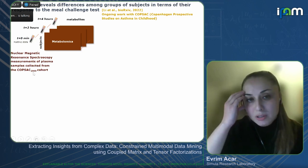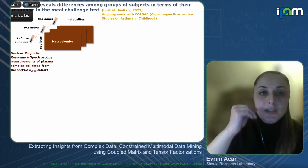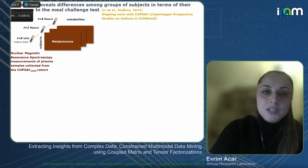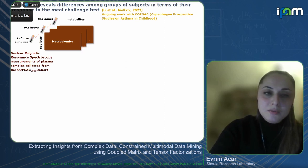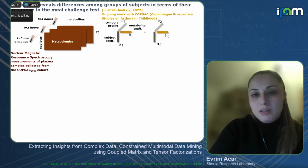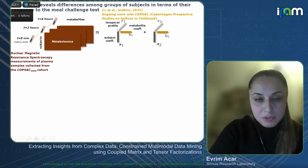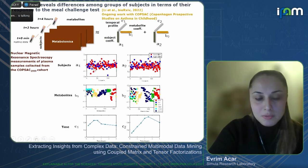Here we have metabolomics measurements of plasma samples collected during a meal challenge test. After an overnight fast, participants drink a dietary shake and blood samples are taken at certain time points for the next four hours. The data is in the form of a subject by metabolite by time tensor. We model this tensor using a two-component CP model. Let's see what the components reveal — this is the first rank-one component with A1, B1, C1, and the second component with A2, B2, C2.